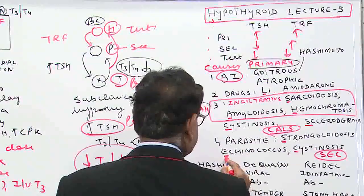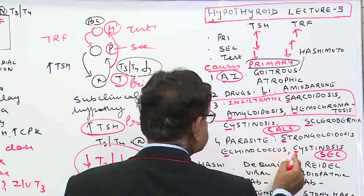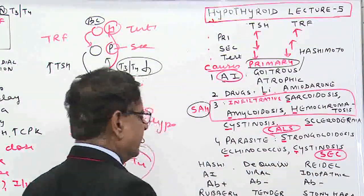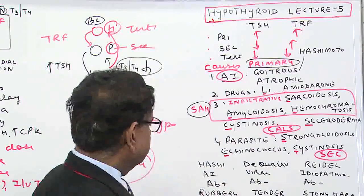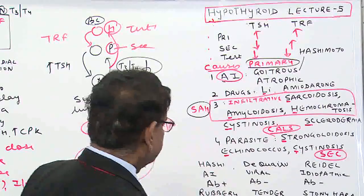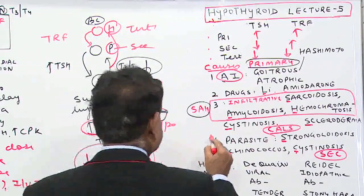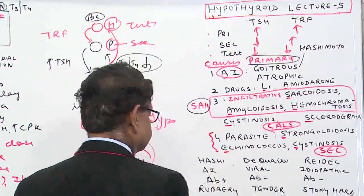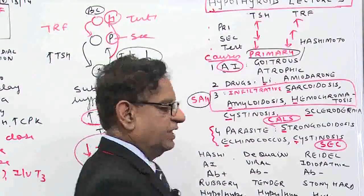The parasitic causes of thyroiditis are Strongyloides, Echinococcus, and Cysticercosis — the mnemonic is SEC. Of course, they lead to thyroiditis.